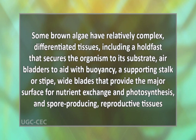Some brown algae have relatively complex differentiated tissues, including a holdfast that secures the organism to its substrate, air bladders to aid with buoyancy, a supporting stalk or stipe, blades that provide the major surface for nutrient exchange and photosynthesis, and spore-producing reproductive tissues. The specialized reproductive cells of brown algae are shed into the water and are motile, using two flagella to achieve locomotion.